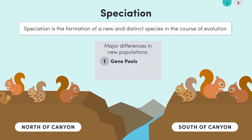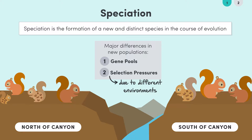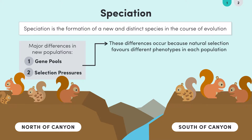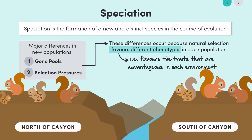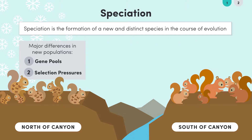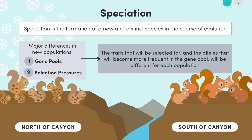And secondly, the selection pressures either side of the canyon are different because the environment is slightly different. The selection pressures involve temperature and food availability. This means that natural selection favoured different phenotypes in each population — in other words, the traits that are advantageous will vary in each environment. For example, the north side of the canyon experiences colder winters and more rain and snow than the south, meaning squirrels with thick fur are more advantageous on the north side.